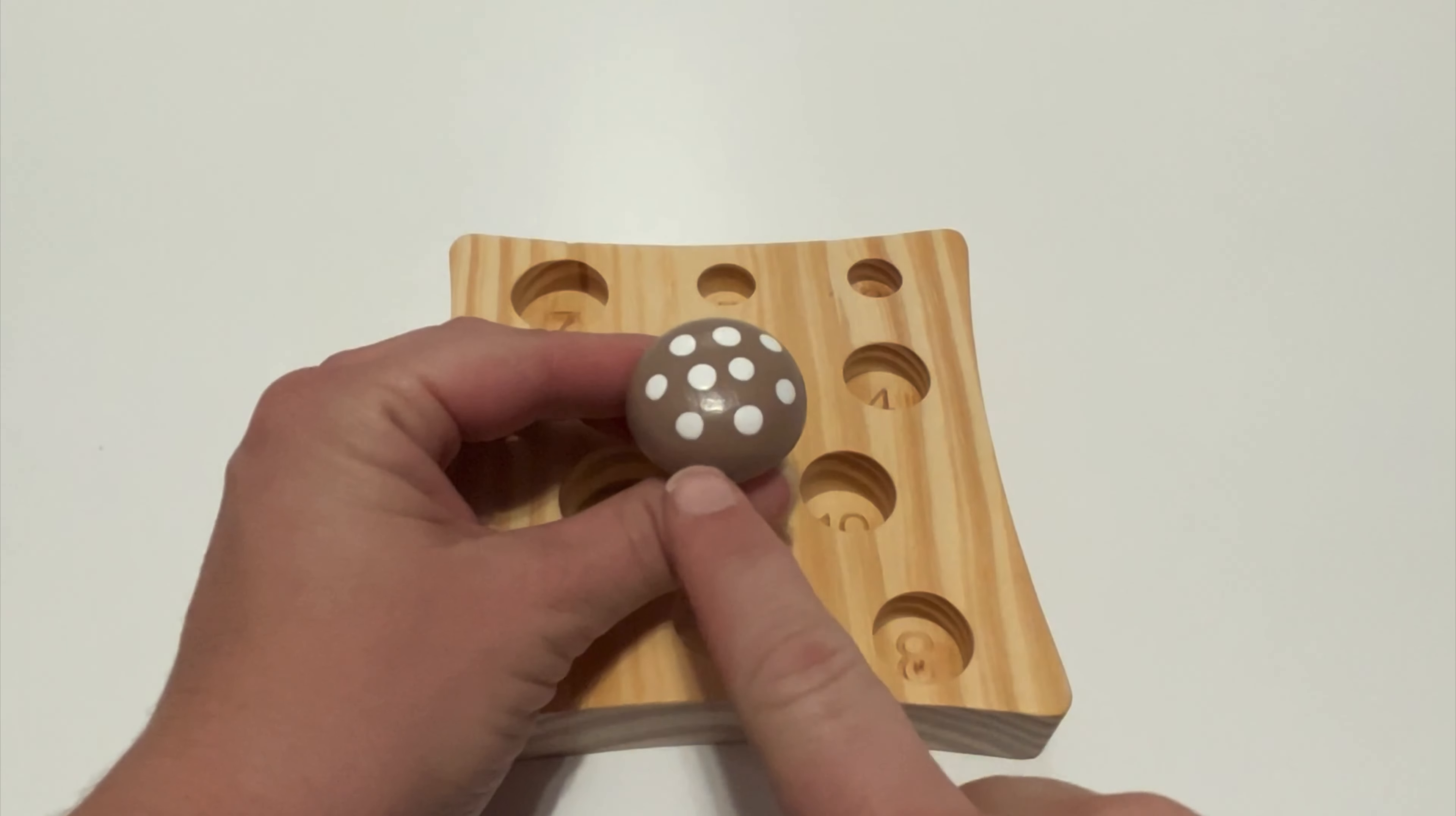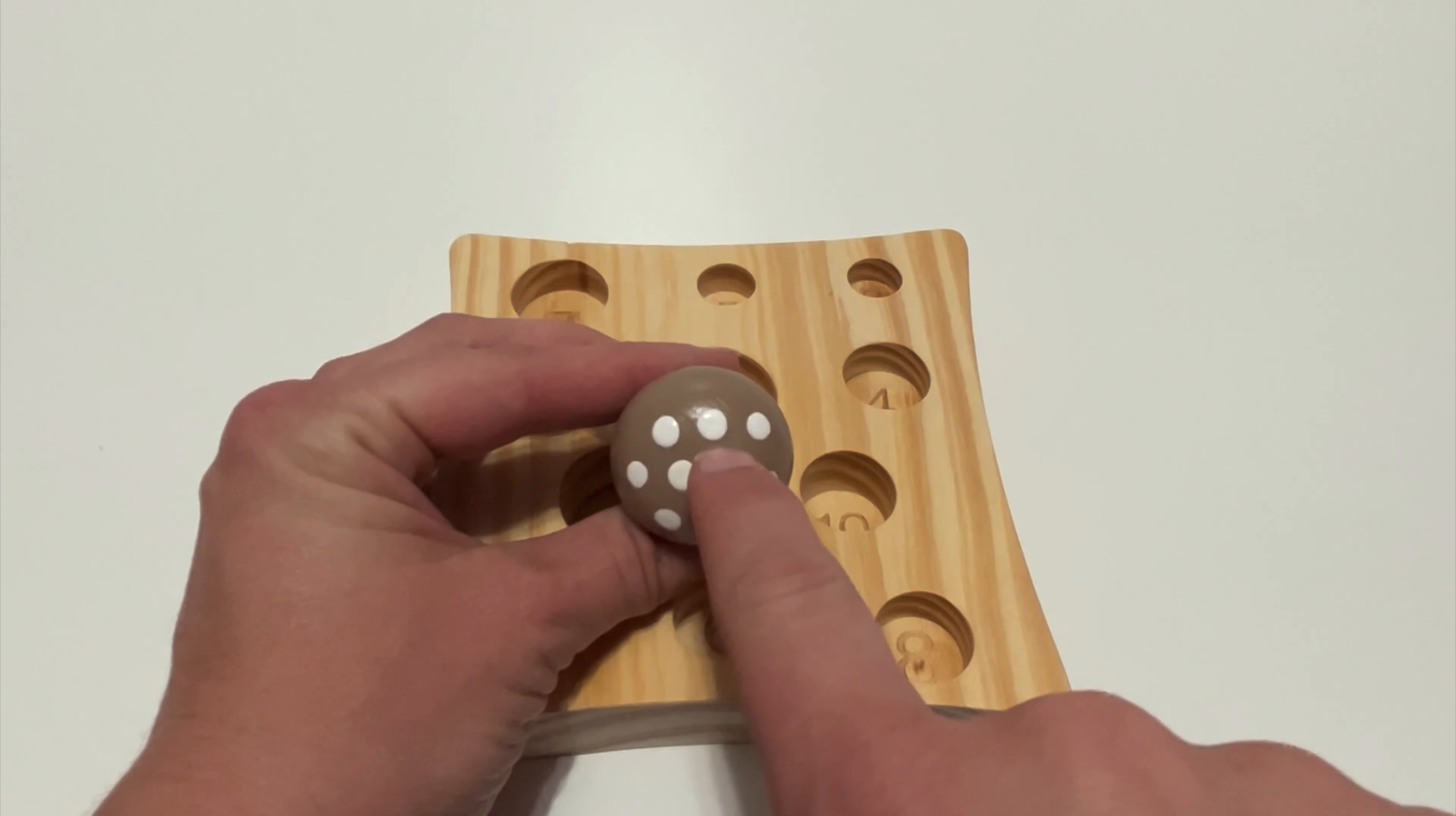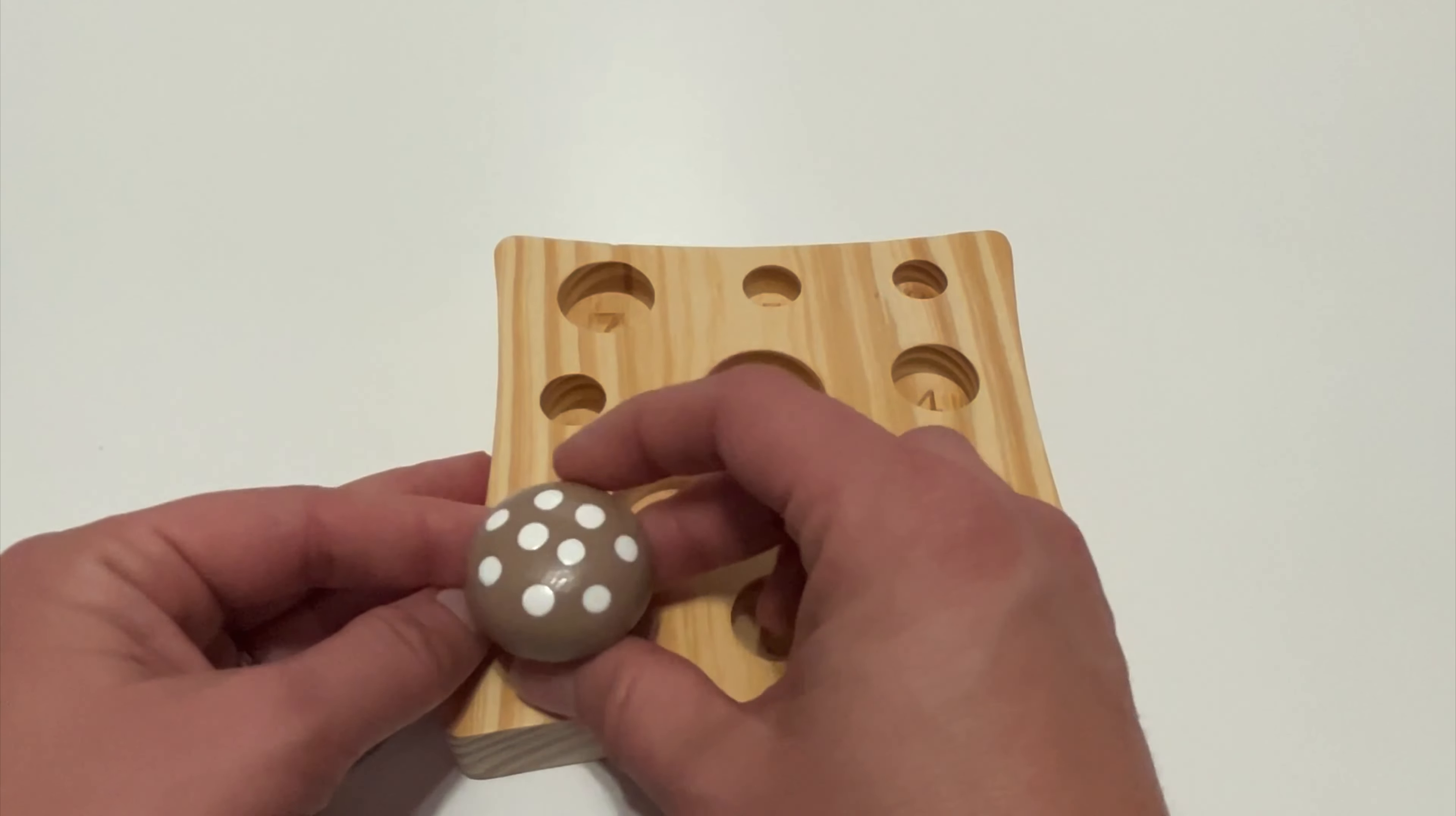How many? One, two, three, four, five, six, seven, eight, nine. We have nine white circles. Where's that number nine? Here it is.